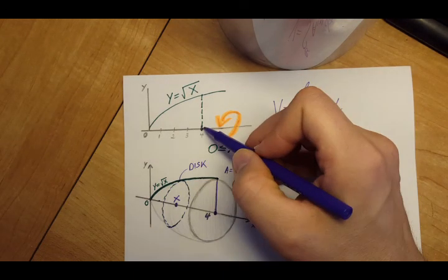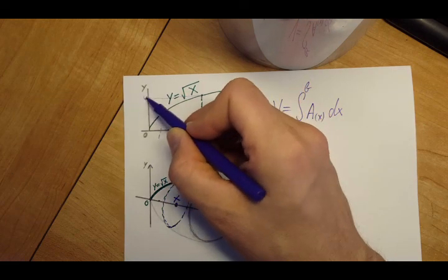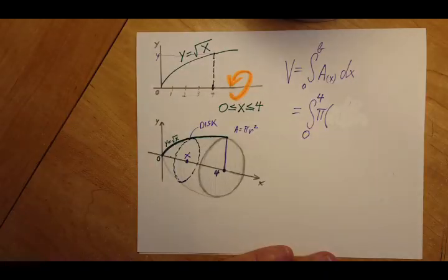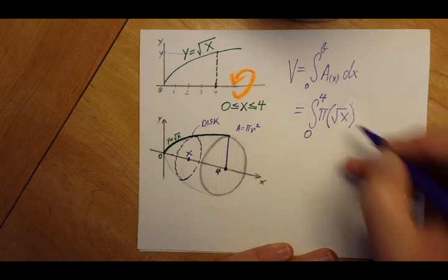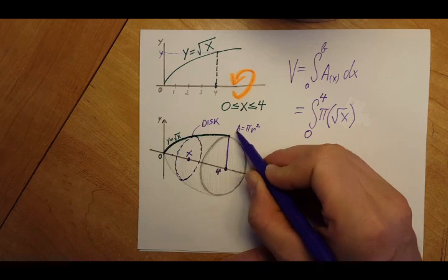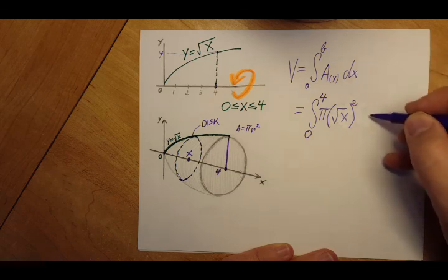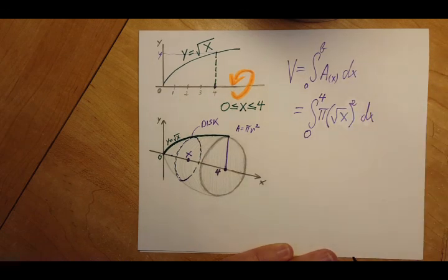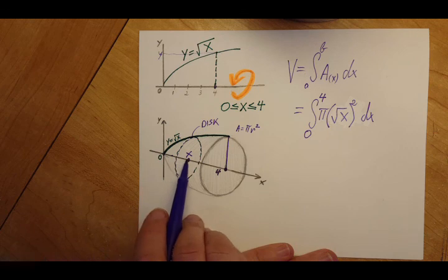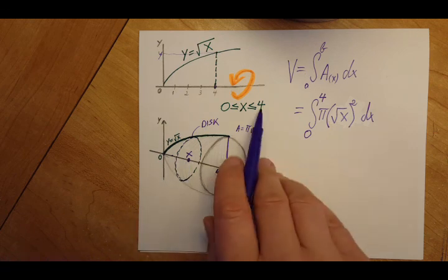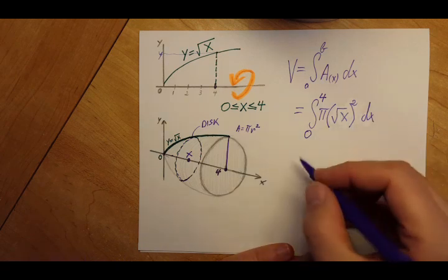That's given for us, which is y equals square root of x. So let's take this radius and plug it in: square root of x. The formula for the area says it's r squared, so we're gonna put it on the square, the dx comes down, and there you go. My limits are 0 to 4, like we said.